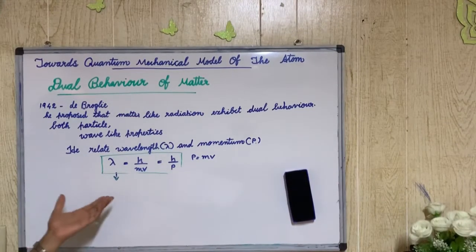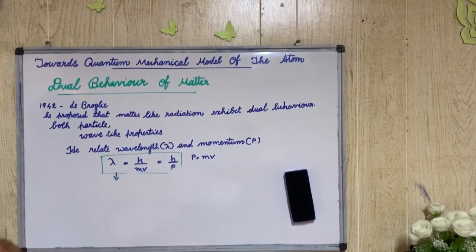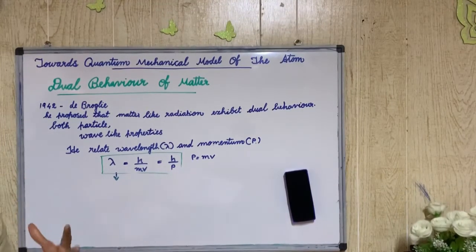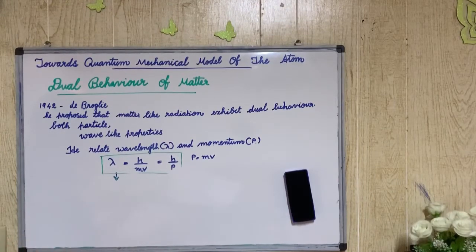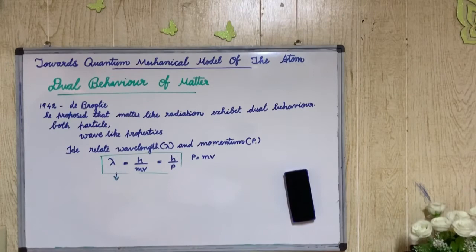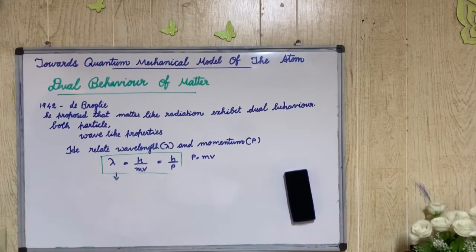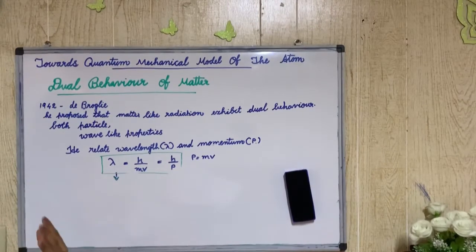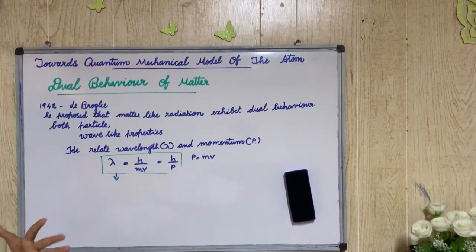Matter has both Particle Nature and Wave Nature. Like photons, electrons also have wavelength and momentum. Just as light has photon-like particle nature, electrons exhibit both particle and wave nature — they possess both wavelength and momentum.